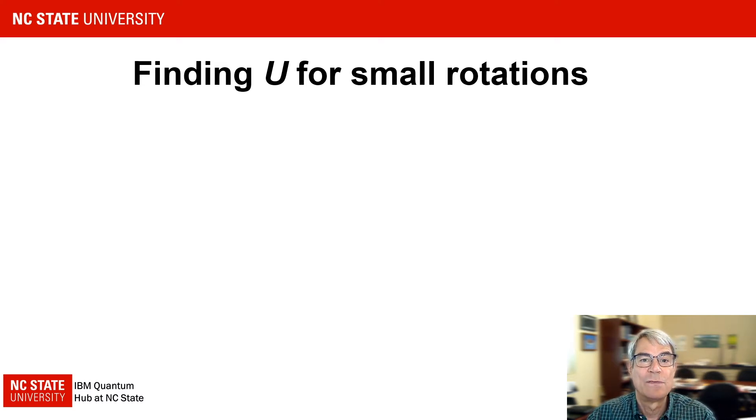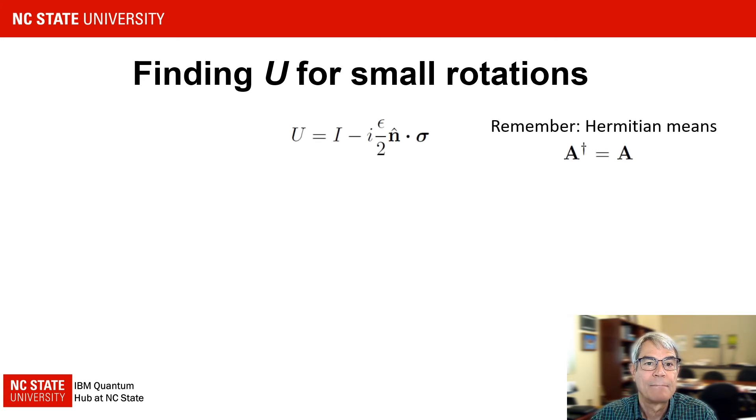To simplify our consideration of rotations, let's consider an infinitesimal rotation epsilon about the axis n hat, the unit vector in the desired axis of rotation. In this case, we anticipate that U will differ only slightly from the identity operator. So to first order in small quantities, we can express U with two terms in a McLaren series. Here, sigma is an arbitrary Hermitian vector operator that is yet to be determined. Remember that a Hermitian operator A is one for which A dagger equals A. The fact that sigma is Hermitian along with the coefficient i on the second term ensures that U is indeed unitary to first order in epsilon. Note, we could have absorbed the factor of one-half into the so-far unspecified sigma, but including it explicitly as shown here will lead us to the definition of sigma that is most commonly used.